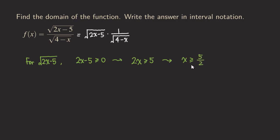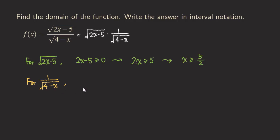So now we know that x must be greater than or equal to 5/2 in order for this square root to be real. For the other piece, we can use a similar idea — look at the stuff inside the square root. However, this is something we need to pay attention to: since this square root is in the denominator, we do not allow 4 minus x to equal 0, otherwise we would be dividing by 0 and the function would be undefined. So we are considering 1 over the square root of 4 minus x, not just the square root of 4 minus x.